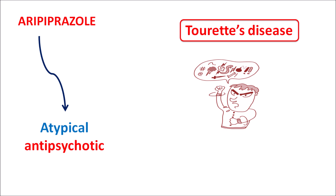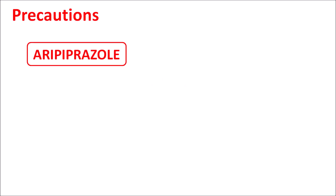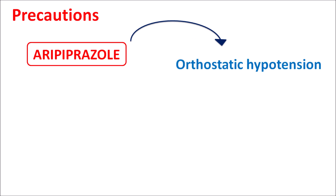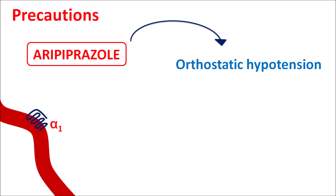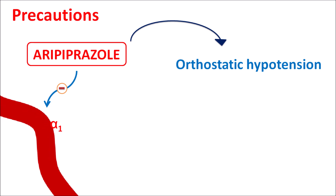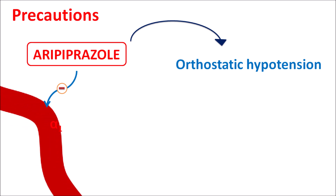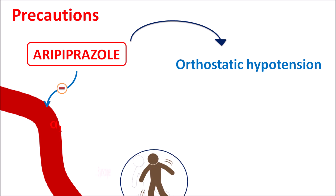Today we are going to see the important precautions and side effects of aripiprazole. First, just like other antipsychotics, it can produce orthostatic hypotension — a reduction of blood pressure with change in posture, also called postural hypotension. This effect of aripiprazole is because of its action on alpha-1 receptors on blood vessels. Alpha-1 receptors are responsible for vasoconstriction; aripiprazole can block these alpha-1 receptors resulting in vasodilation, which reduces blood pressure leading to orthostatic hypotension. In such patients, we can observe syncope and a falling sensation.